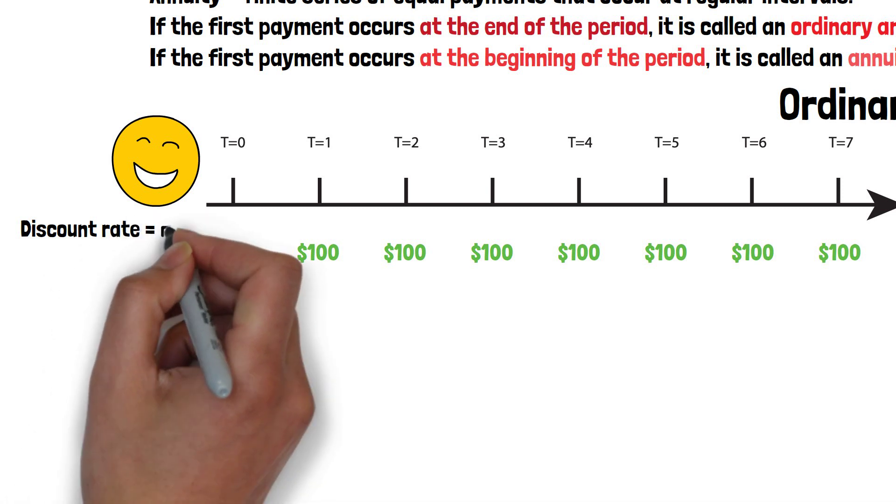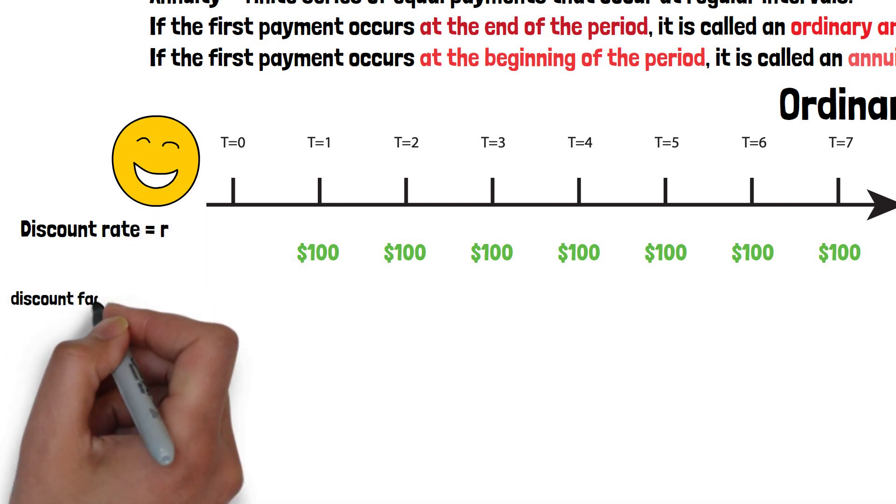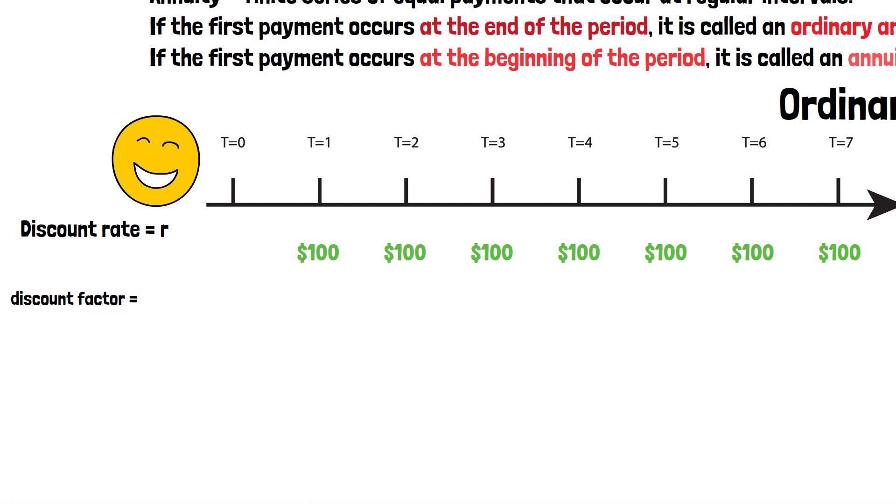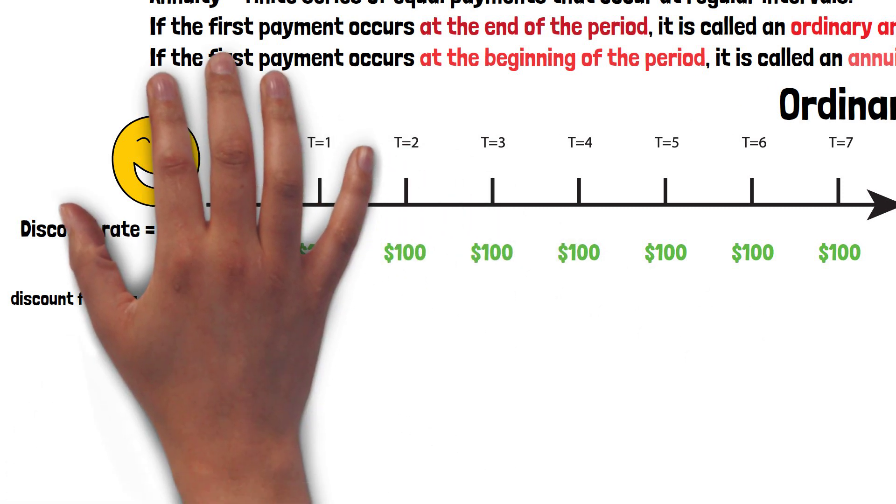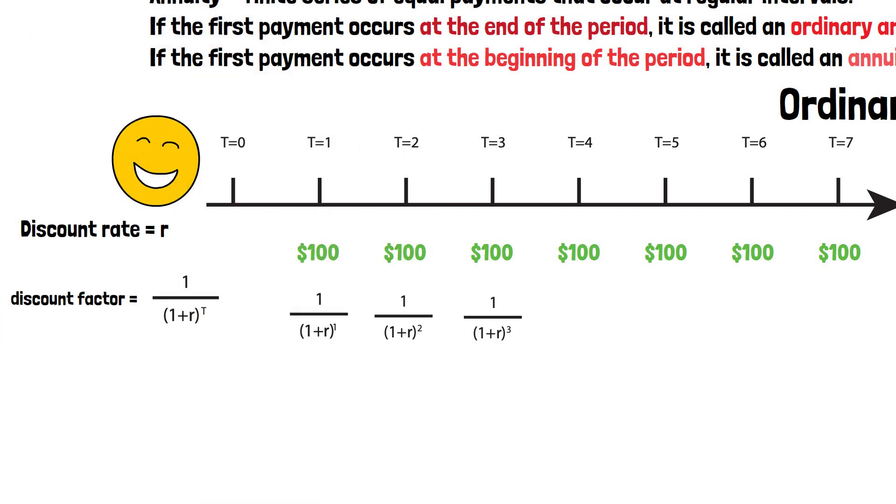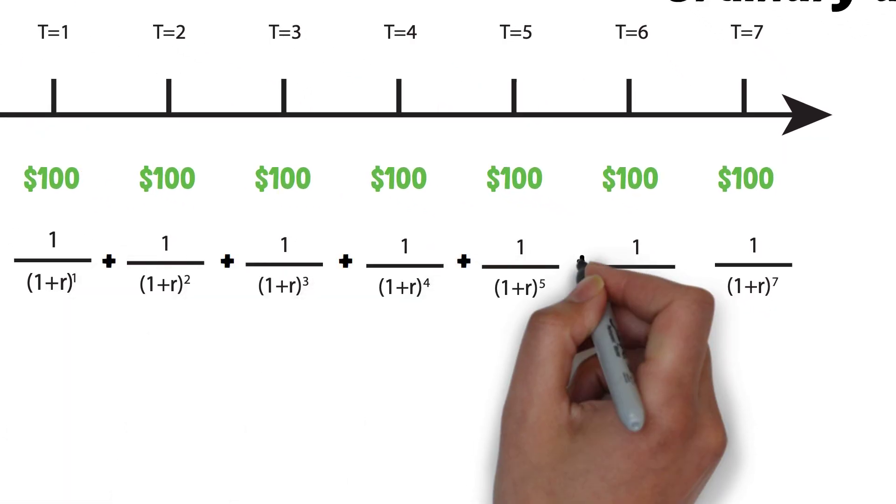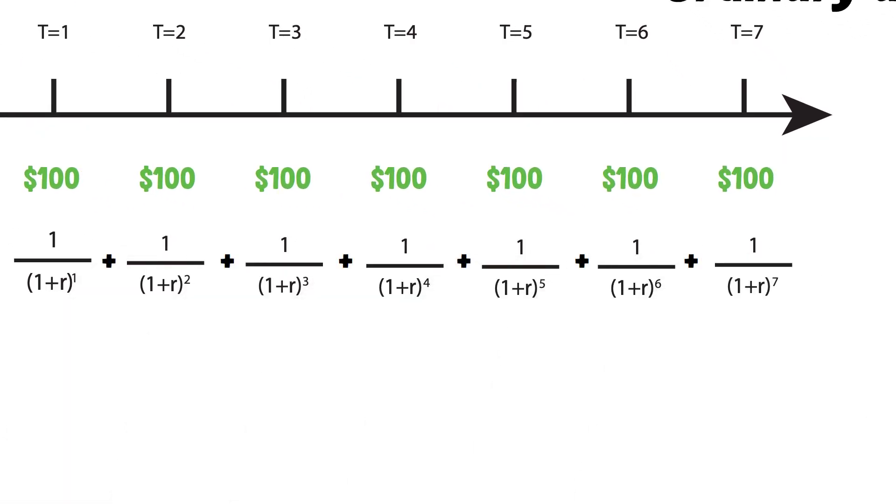Let's assume the discount rate is R. The discounting factor would be 1 divided by 1 plus R to the power T. Now we know what is the discounting factor for each year. The question is, when I add them up, what is the sum?